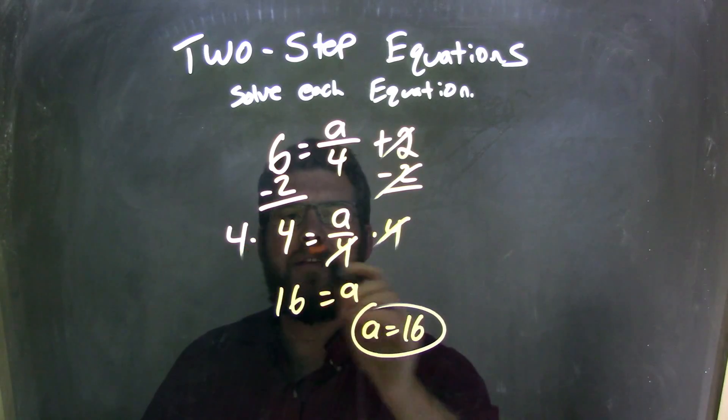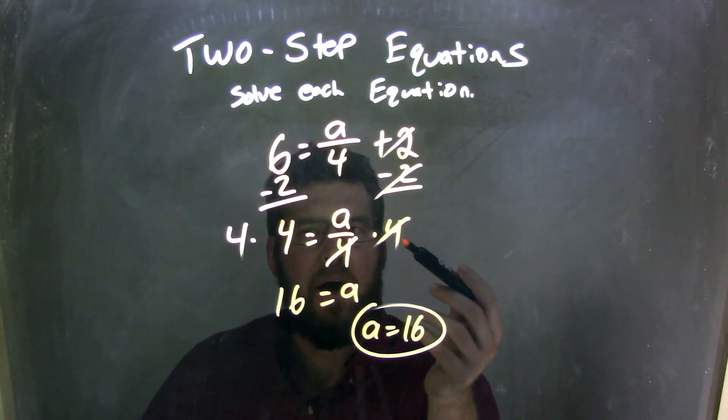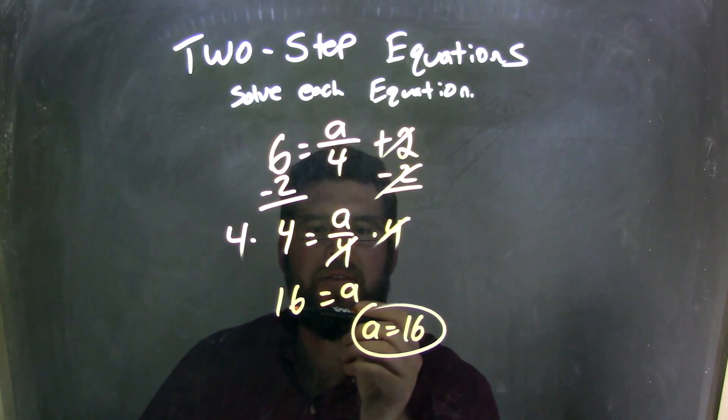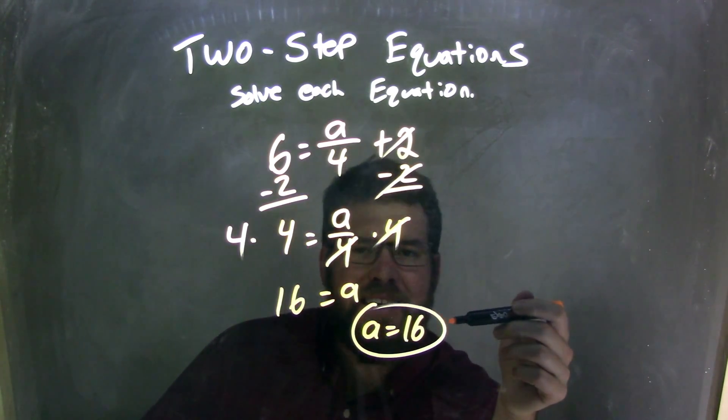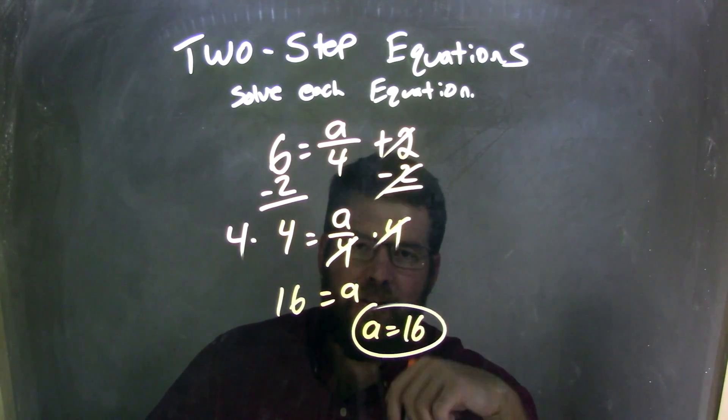I then multiplied 4 to both sides because there was division, A divided by 4. Multiply by 4, it cancels that out. 4 times 4 over here becomes 16, so I have 16 equals A. To write it nice and neat, I put A first, and I got A equals 16 as my final answer.